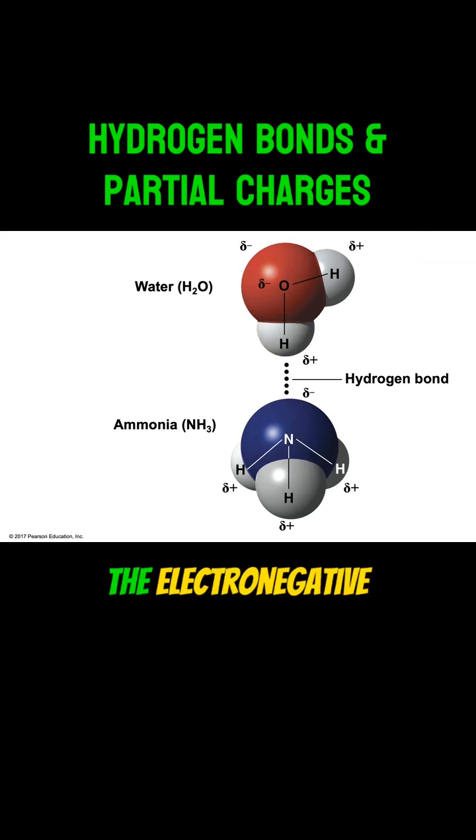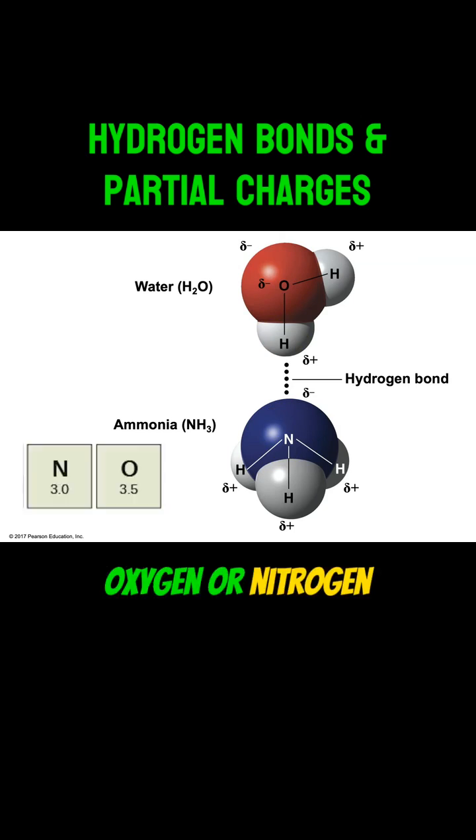In living cells, the electronegative partners are usually oxygen or nitrogen atoms. Why is there a bond formed here? It's because of the partial charges.